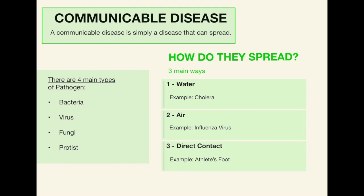Starting us off we have communicable disease. A communicable disease is simply a disease that can spread — it can be spread from person to person, for example. There are four main types of pathogen, or effectively disease, and that includes bacteria, virus, fungi, and protist. It is crucial that you remember all four of those, and we will talk in more depth about each of those later on in the video.